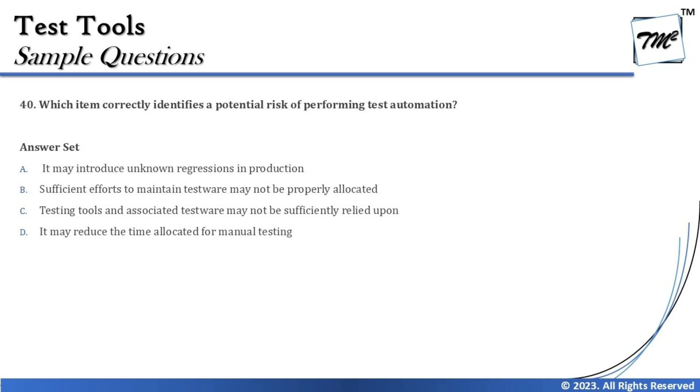The next and final question is question number 40, which asks: which item correctly identifies a potential risk of performing test automation? Risks of test automation have been clearly described in the syllabus — covering vendor-related risks, not being ready for the tool, tools lacking competency, over-reliance, and many other factors. The options will help drive the right answer.